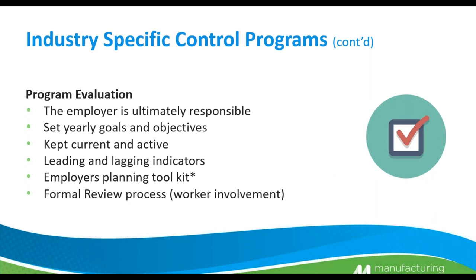A program needs to be kept current and active. We talked about leading and lagging indicators — we should have a mixture of both when looking at internal and external stats. The Employer Planning Toolkit is a free tool provided by WorkSafe where you can look up your stats: it shows your trending, injuries, and time loss. One key feature most companies find interesting is it will plot your company against other companies in your industry to see where you stand — not by name, just as a dot on a graph — so you can compare yourself to fellow industries in your sector.